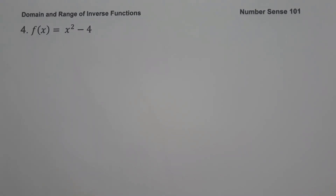On our last example, f of x equals x squared minus 4. The given example is a quadratic function. This is a function but not one-to-one because it fails the horizontal line test. Currently, the domain of this function is from negative infinity to positive infinity.